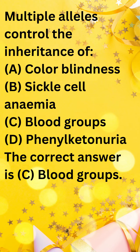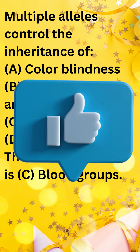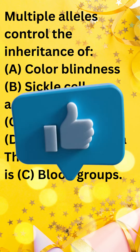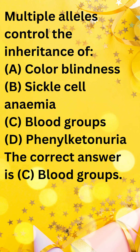Color blindness is mainly caused by a single gene with two alleles, leading to normal vision or color blindness. Sickle cell anemia is caused by a mutation in a single gene with two alleles, leading to normal hemoglobin or sickle cell hemoglobin.